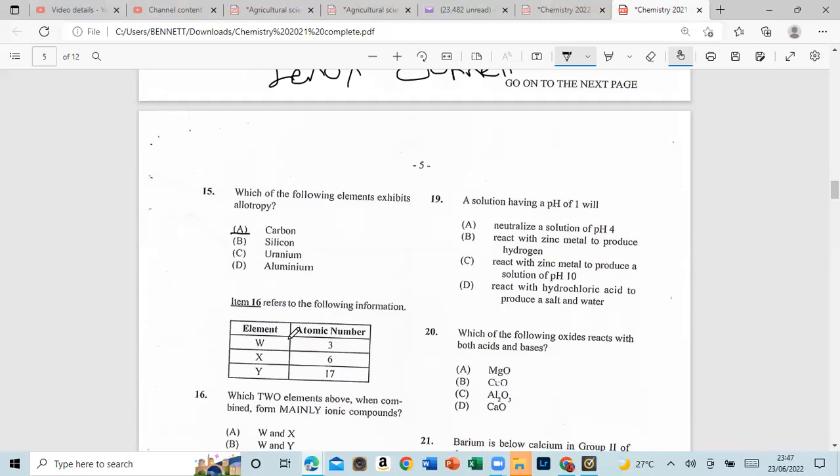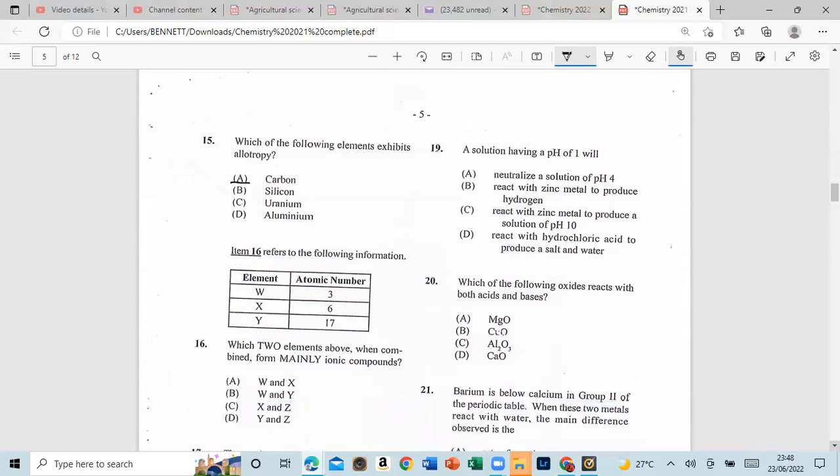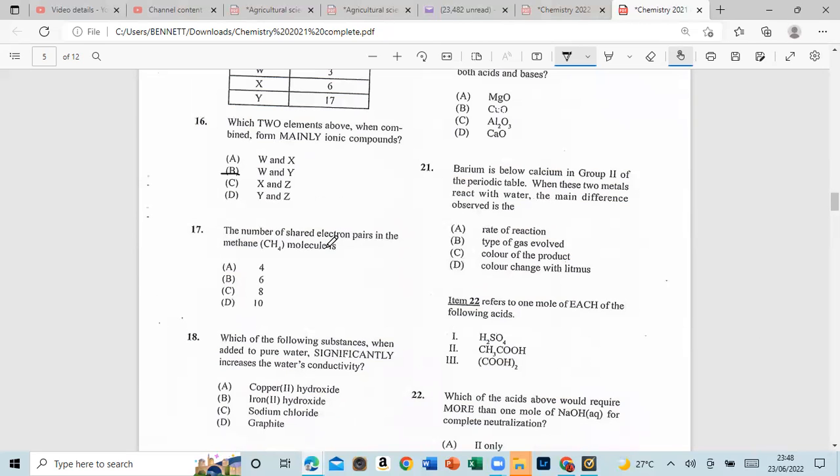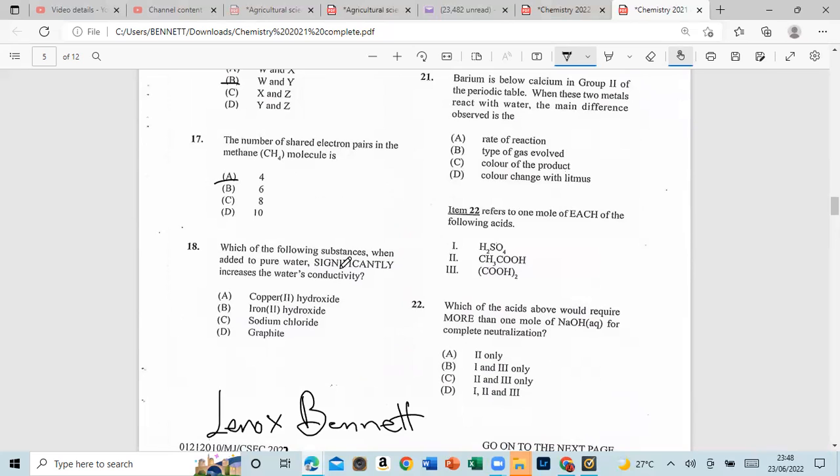Number 17, the number of shared electron pairs in a methane CH4 molecule is? And that is 4. Number 18, which of the following substances when added to pure water significantly increase the water conductivity? And that would be C, sodium chloride.